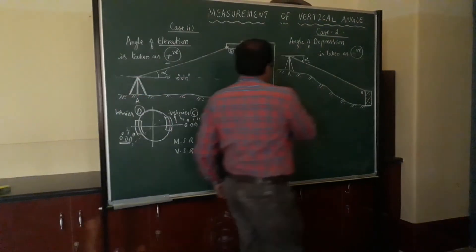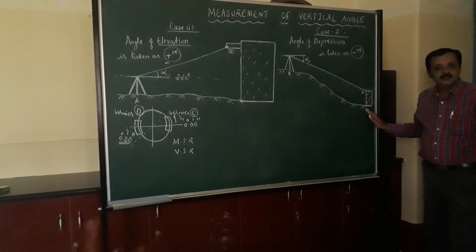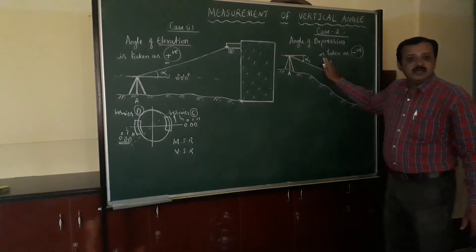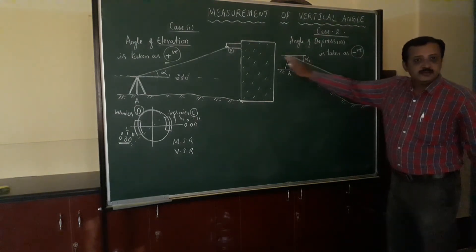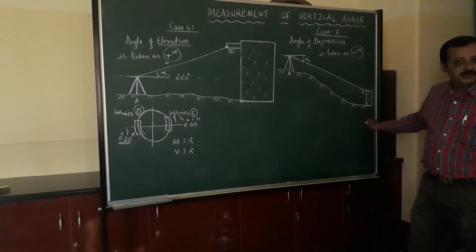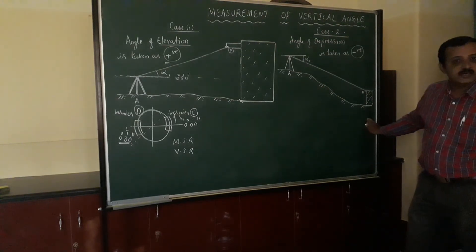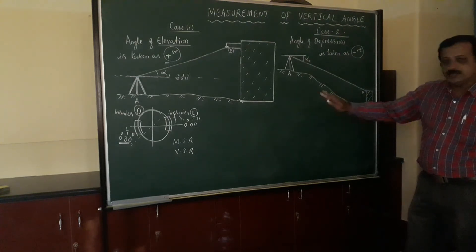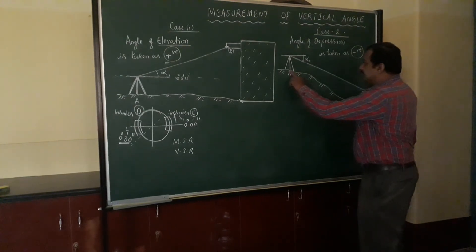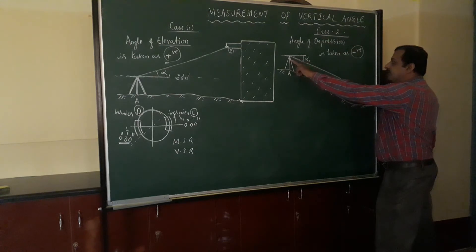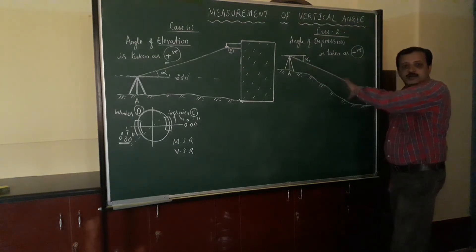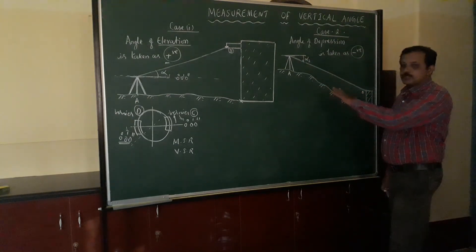Now for the second problem — in this case, the object is below the horizontal line of sight. The line of sight is directed downward, below the horizontal axis. The objective is to find the angle of depression from station A to station B. The procedure is the same — set the instrument at station A, do all temporary adjustments: centering, leveling, and focusing to remove parallax.